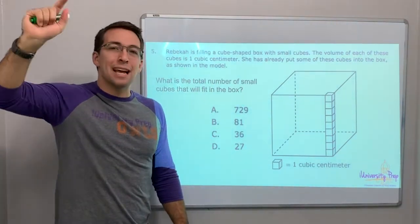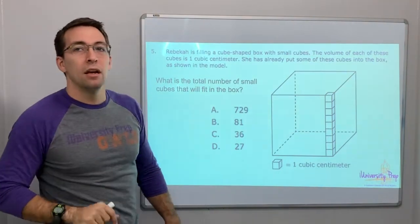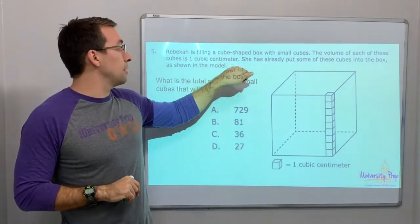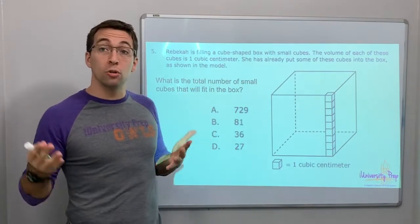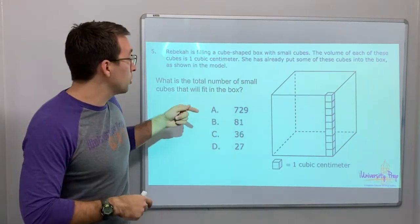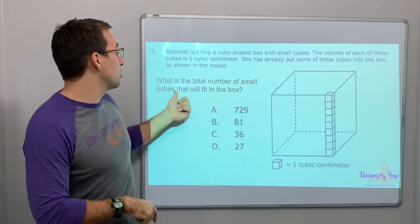Cubes are like squares. Every side length is the same. Remember that. The volume of each of these cubes is one cubic centimeter. She has already put some cubes into the box, as shown in the model. What is the total number of small cubes that will fit in the box?